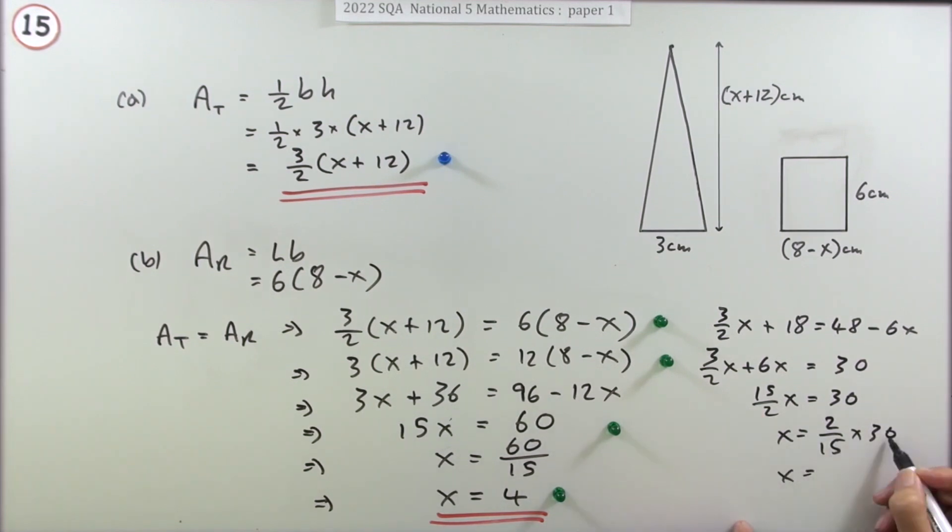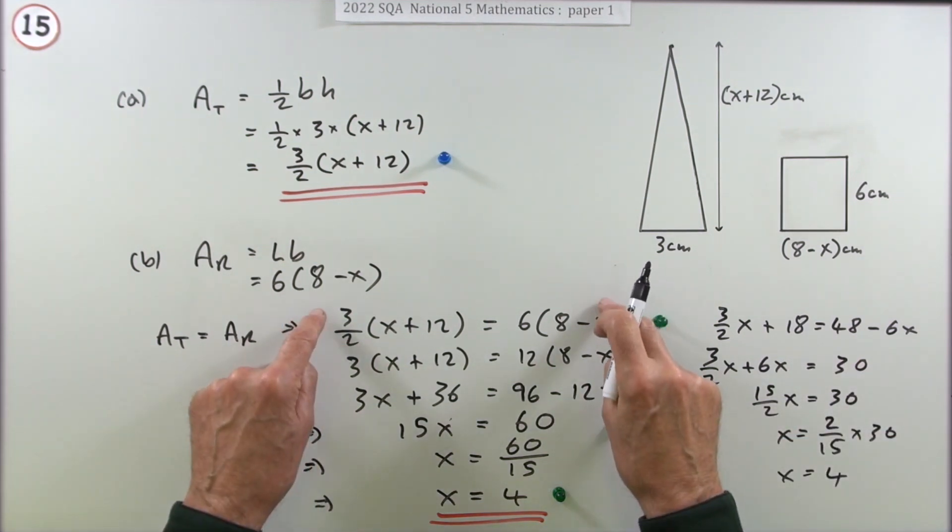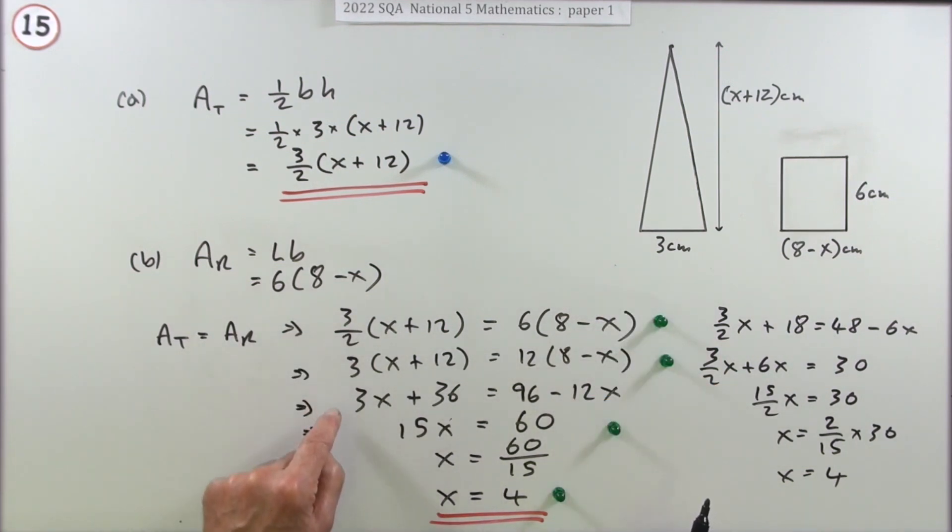But notice what happens here is if you keep the fractions, you're going to end up with fractions all the way through and there'll be fractions involved in all of the multiplications and additions and so on. That's why normally you get rid of fractions straight away, so you've just got nice little whole numbers to work with.